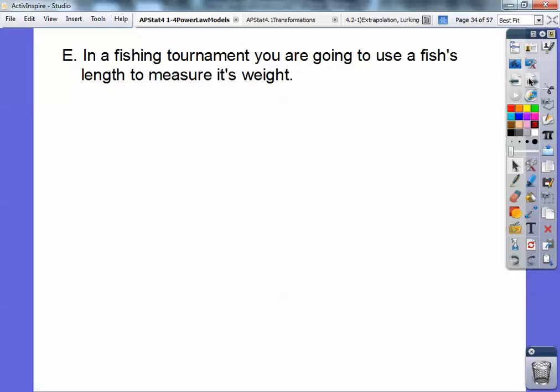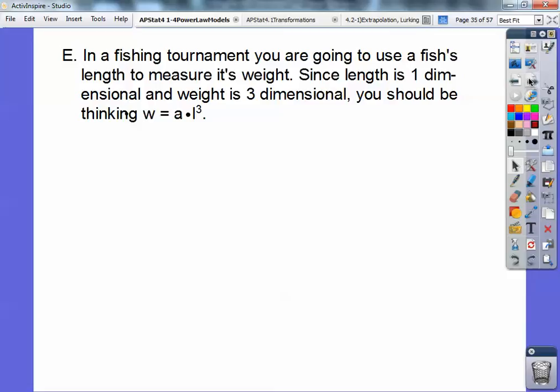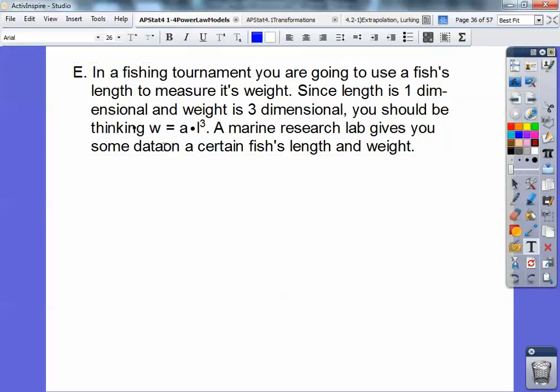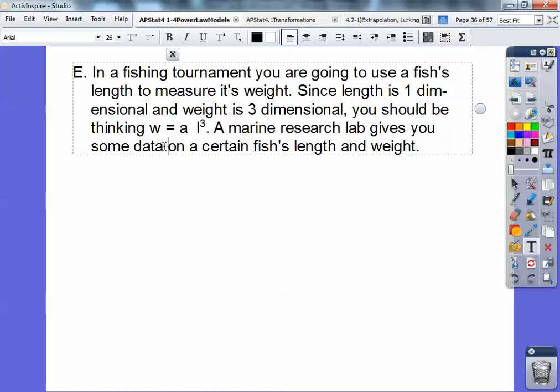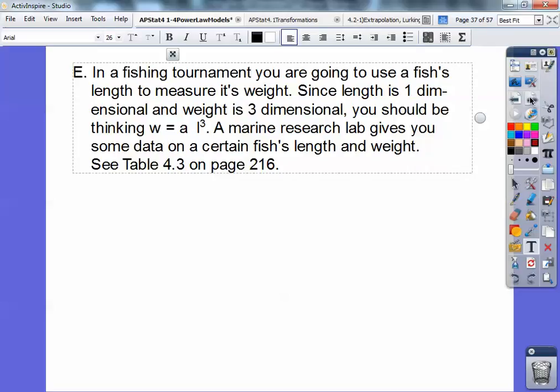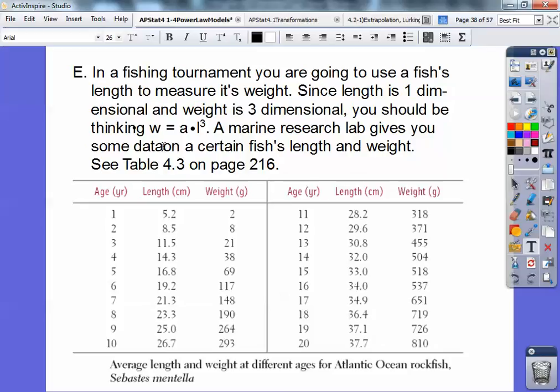So in a fishing tournament, you're going to use a fish's length to measure its weight. So since length is one dimensional and weight is typically a volume, it's three dimensional, you can be thinking of W, which is weight equals A times your length cubed. So a marine research lab gives you some data on a certain fish's length and weight. So see table 4.3 on this, and so here's table 4.3 right here, and it's right there.